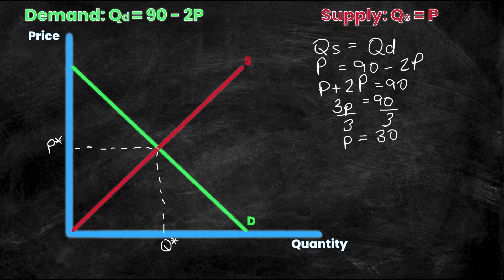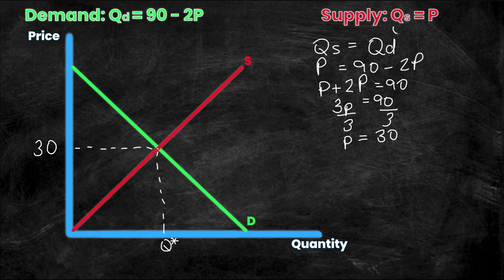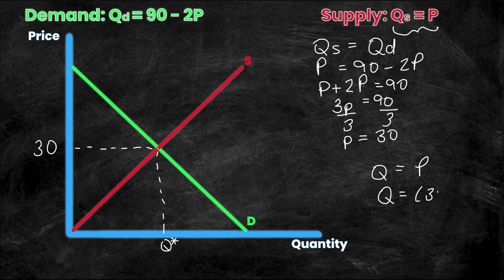The optimal price equals 90 divided by 3, which is 30. So P* equals 30. Now I need to calculate Q*. I can use either equation, but I'll choose the supply equation since it's straightforward: q equals p. Substituting p equals 30, I get Q* equals 30 as well. So the equilibrium price is 30 and the equilibrium quantity is also 30.